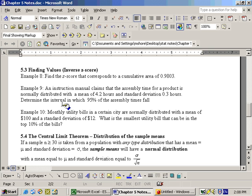This is section 5.3, and this is on inverse Z-scores. So this first problem says find the Z-score that corresponds to a cumulative area of 0.9803. In other words, it's giving you a probability and you have to get the Z-score.